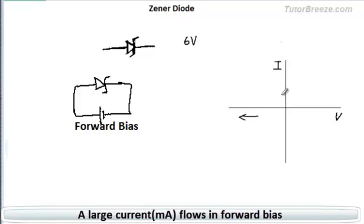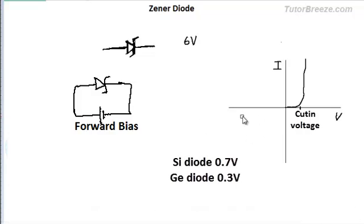If I draw this on the VI graph, then I would get something like this. The current increases at a certain voltage which is called the cut-in voltage which in case of a silicon diode is about 0.7 volts and in case of a germanium diode is about 0.3 volts.